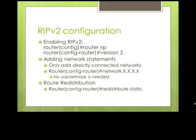There is a new command available with RIPv2 called 'redistribute static'. This will allow you to redistribute your static routes with your RIP updates. So on your router, if you have typed in some static routes and you want those static routes to be propagated to the other routers in your topology, you can use the 'redistribute static' command.